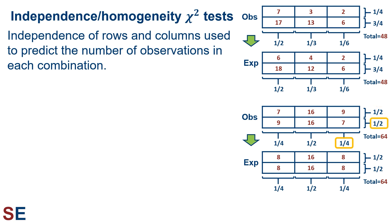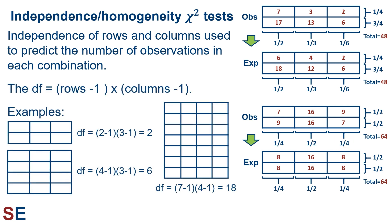The degrees of freedom for tests of independence and homogeneity is the number of rows minus 1 multiplied by the number of columns minus 1. You can visualize this as the number of cells in the grid except for the last one in each row and column. In fact, this is where the term degrees of freedom comes from. Once all the yellow boxes have values, the remaining cells aren't free to vary — they must be whatever it takes to make the row or column total. Only the yellow cells have any degree of freedom.